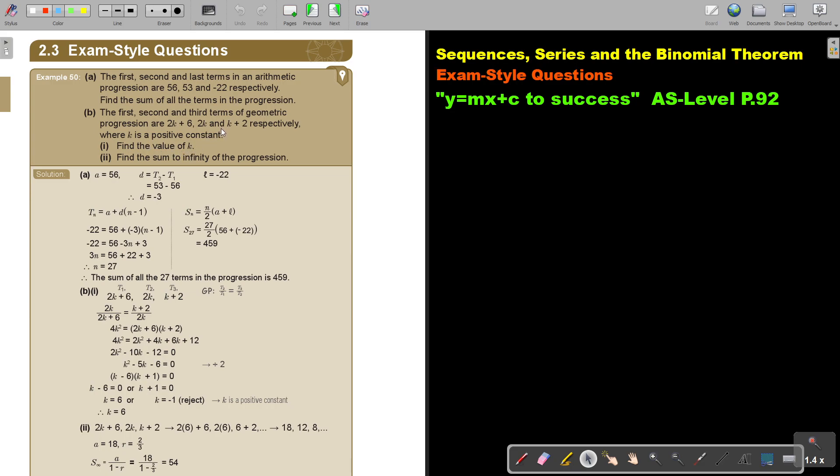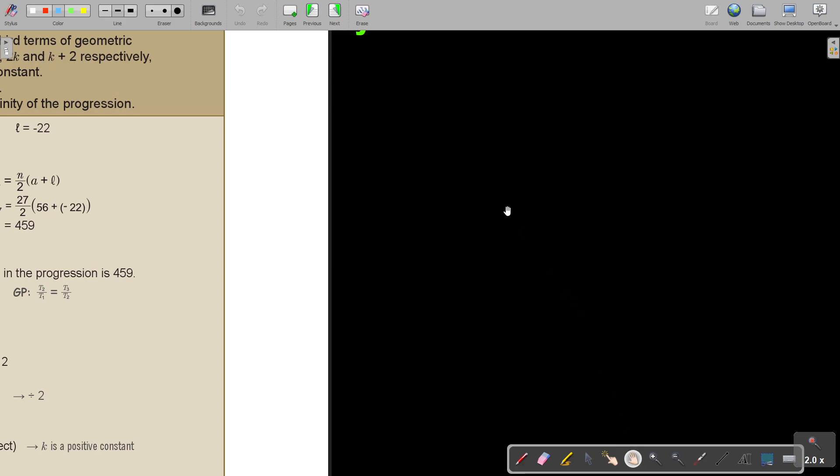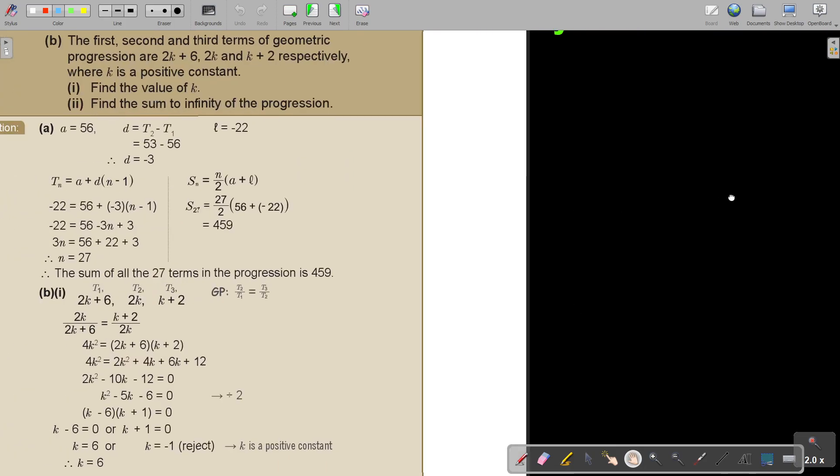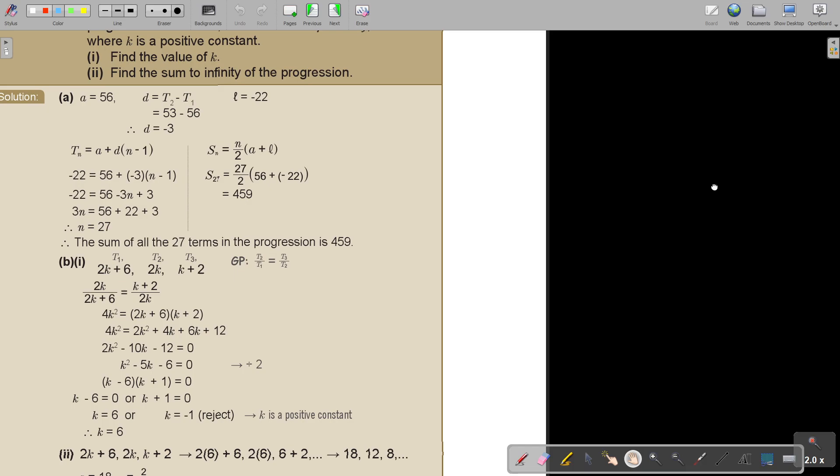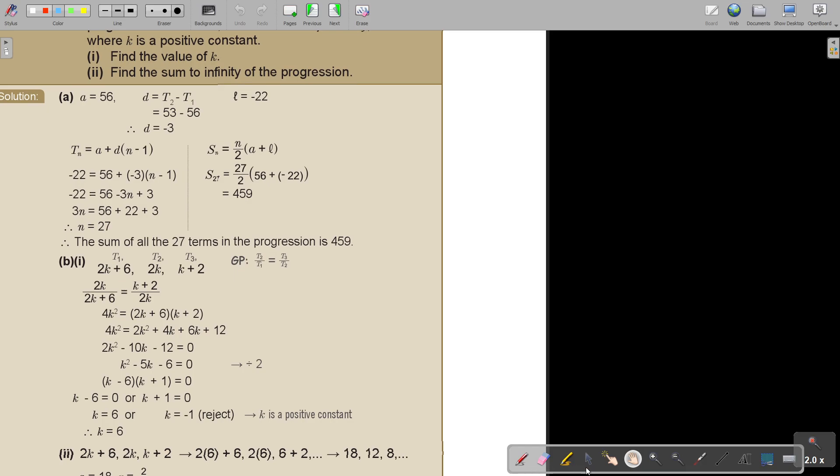Find value of k. Now because it's a gp, I start with this statement where I say t2 divided by t1 is equal to t3 divided by t2. I'm just going to make it a little bit bigger. So basically I'm just going to do that.